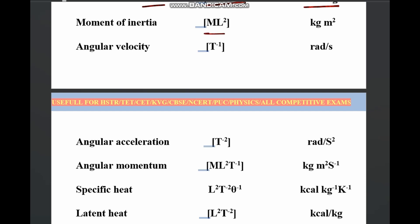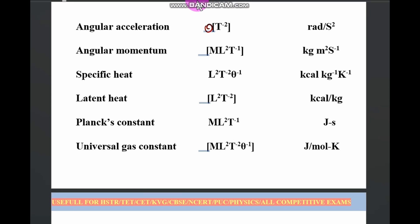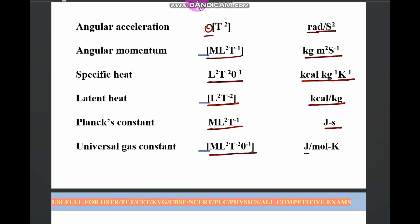Moment of inertia: M L², written in kg·m². Angular velocity: T⁻¹, that is radian per second — here we use theta for angular distance instead of L. Angular acceleration: theta·T⁻², radian per second squared. Angular momentum: M L² T⁻¹, kg·m² per second. Specific heat: L² T⁻² θ⁻¹, kilocalories per kg per Kelvin. Latent heat: L² T⁻², kilocalories per kg. Planck's constant: M L² T⁻¹, joules per second. Universal gas constant: M L² T⁻² θ⁻¹, joules per mole·Kelvin.